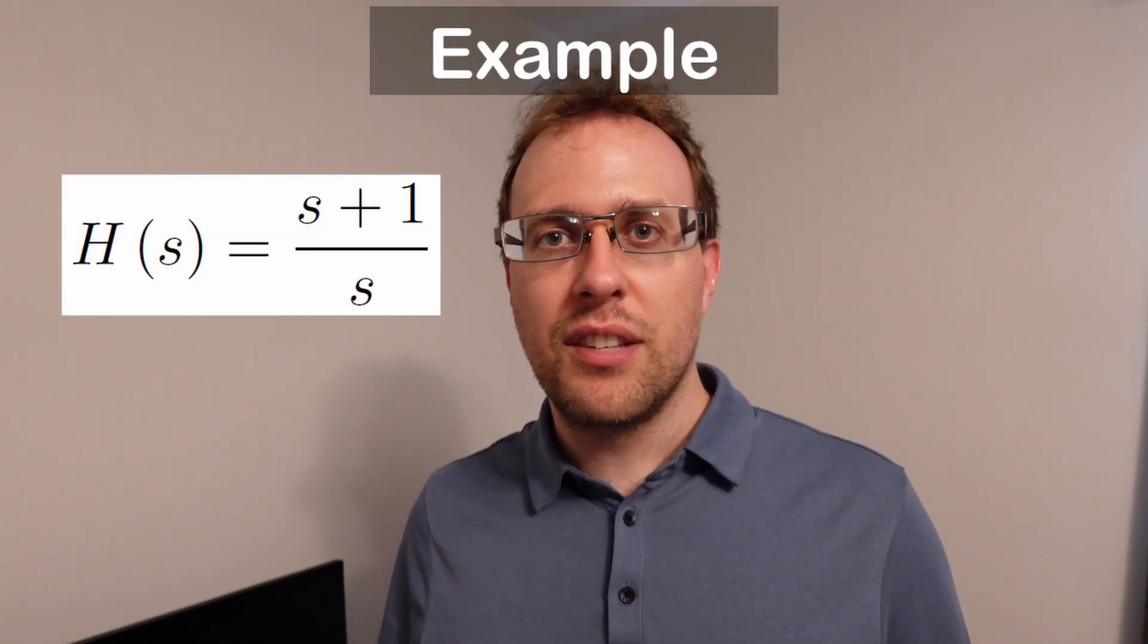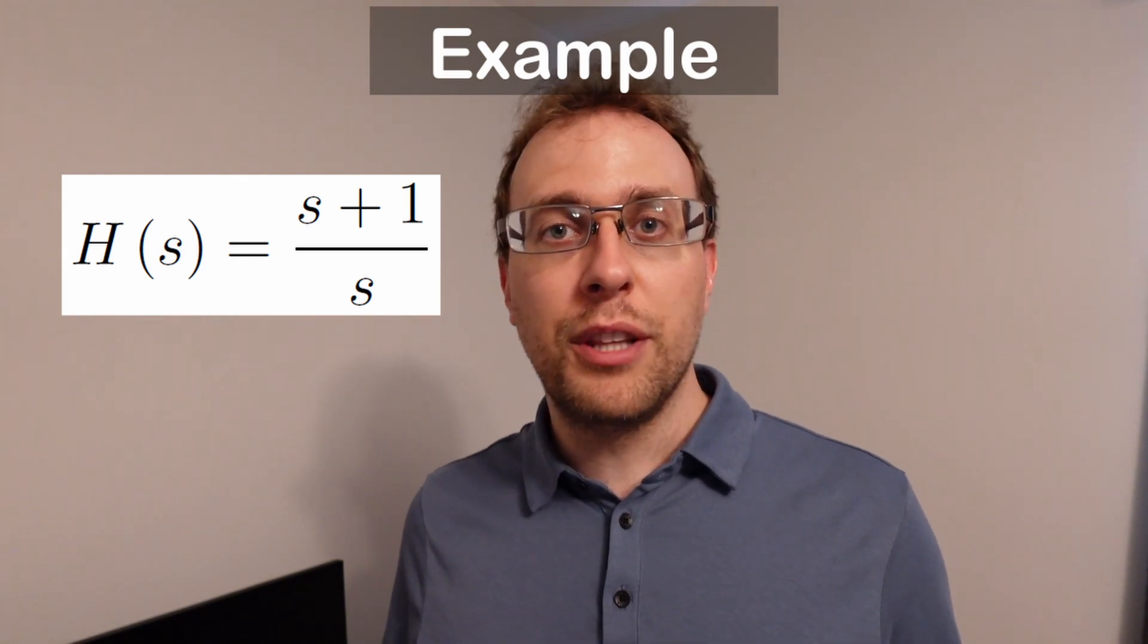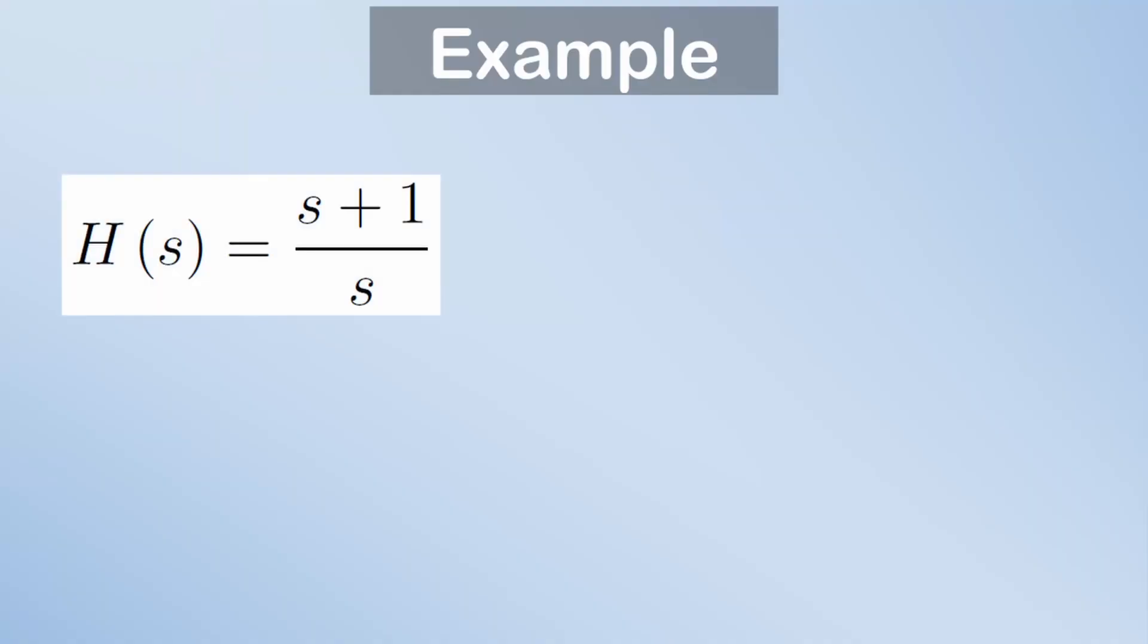Let's look at a very quick example where the transfer function H of s is equal to s plus one over s. You can already read the roots directly. There's a zero at s equal to minus one, since that would make the numerator equal to zero. And there's a pole at s equal to zero, since that would make the denominator equal to zero.